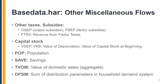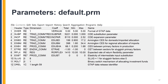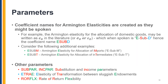We have now covered all coefficients that you will find in the database if you are using the classic version. We now turn briefly to the parameter file. This is relevant only if you are using the model and not just the database. For parameters, the coefficient names are created as they might be spoken.